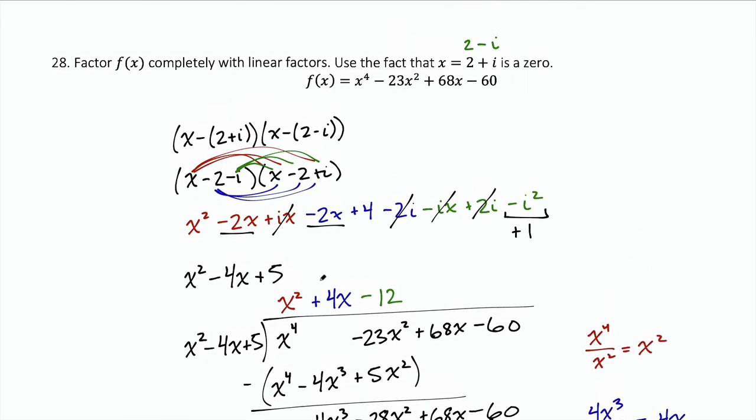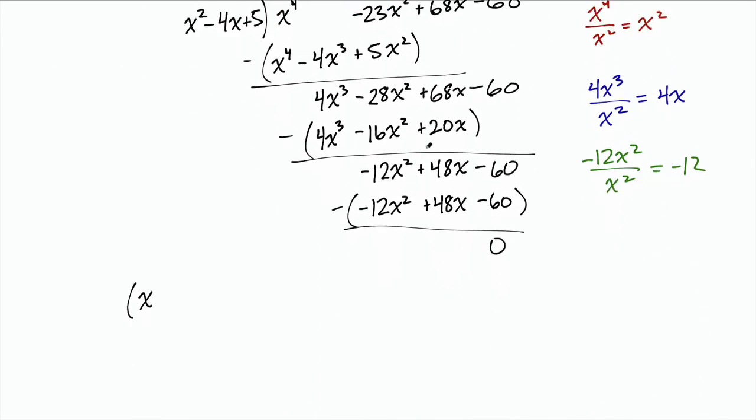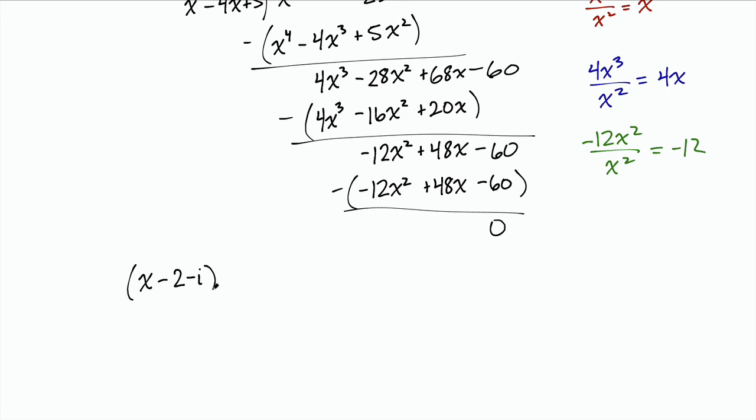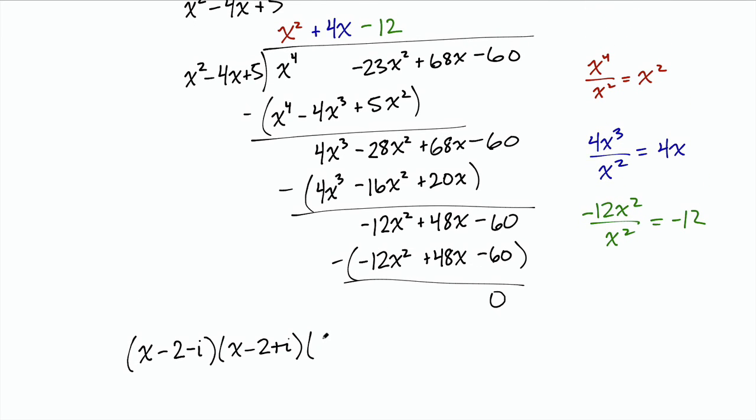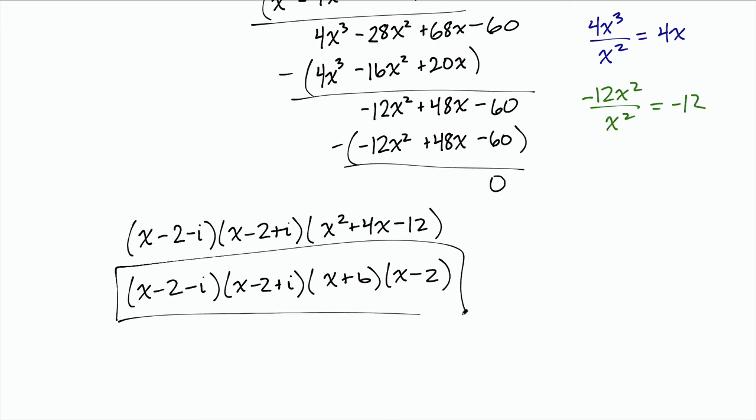We do want it as a product of linear factors. And so we're going to actually leave it as the x minus 2 minus i and x minus 2 plus i. But then we've got this quotient here that we ended up with x squared plus 4x minus 12. And we'd like to be able to factor that. And that's actually pretty straightforward to factor. So we need two numbers that multiply to be a negative 12 and add to be 4. And that is a positive 6 and a negative 2. So this is our factored form using linear factors.